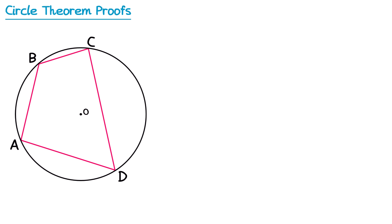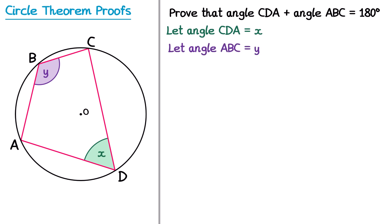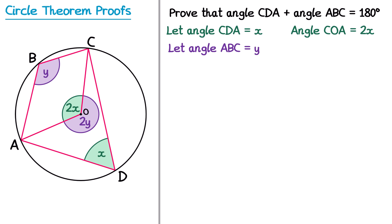Now onto proof number 3: the opposite angles in a cyclic quadrilateral add to 180 degrees. The question might say, prove that angle CDA plus angle ABC equals 180. We start by marking angle CDA as X and angle ABC as Y. We then draw radii from O to A and O to C. Using the theorem we just proved — the angle at the centre is twice the angle at the circumference — we mark angle COA (minor) as 2X, and angle COA (major) as 2Y.